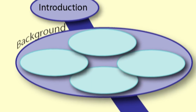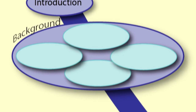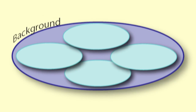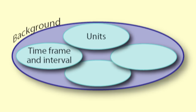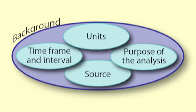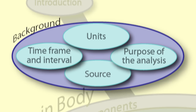A background section comes next. In the background section, you tell what the series is about. You should explain the units, such as percentage, thousands of people, or millions of dollars. You also need to give the time frame and interval at which the data is collected. Give the source of the data. Explain the purpose of the analysis — why you are studying this series or why this analysis would be useful to someone else.